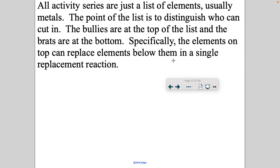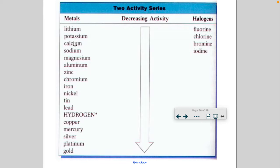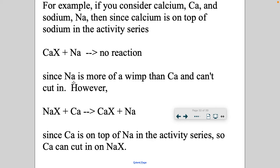So it's just a list of elements, usually metals, and the point of the list is to distinguish who can cut in and when. If the elements on top can replace elements below it, then that reaction will occur. So if I have calcium and sodium, calcium's dancing with X, sodium wants to cut in. Can sodium cut in? Let's find calcium. Here's calcium. Here's sodium. Can sodium cut in? No, it cannot. Since sodium's more of a wimp than calcium, it can't cut in.